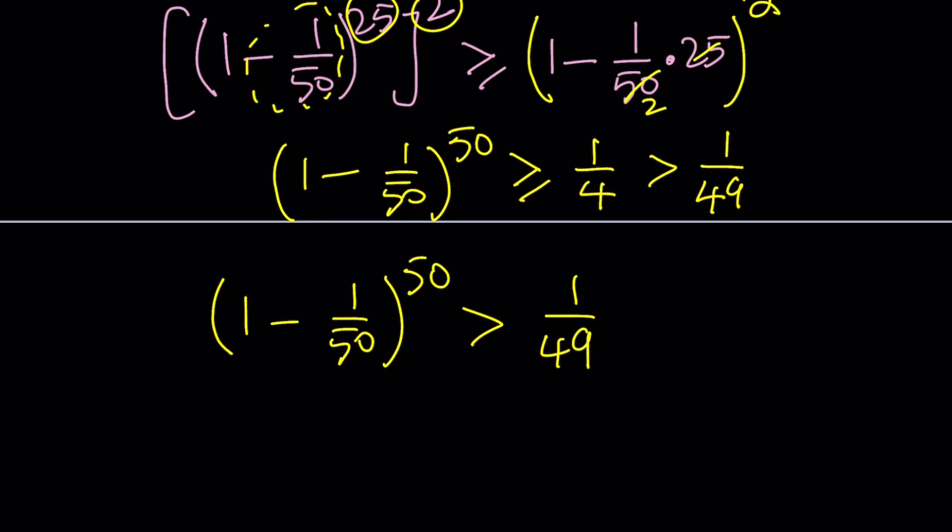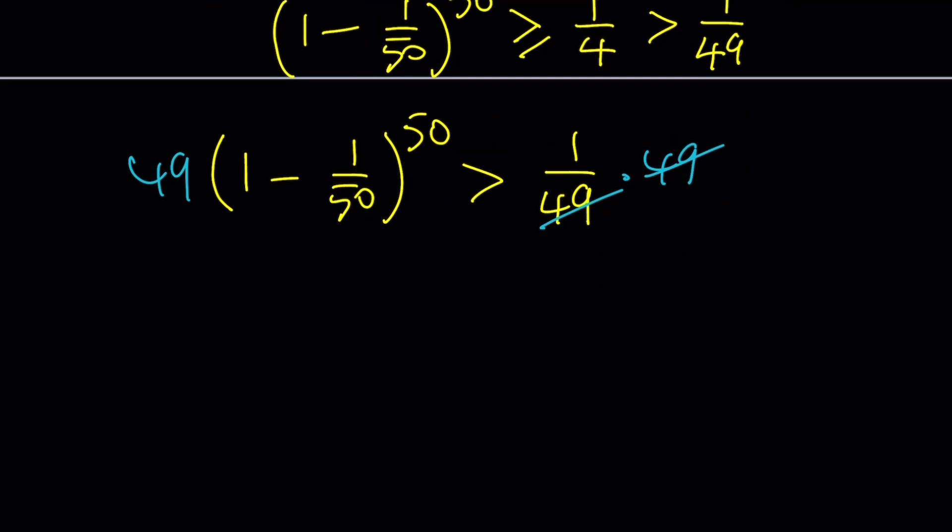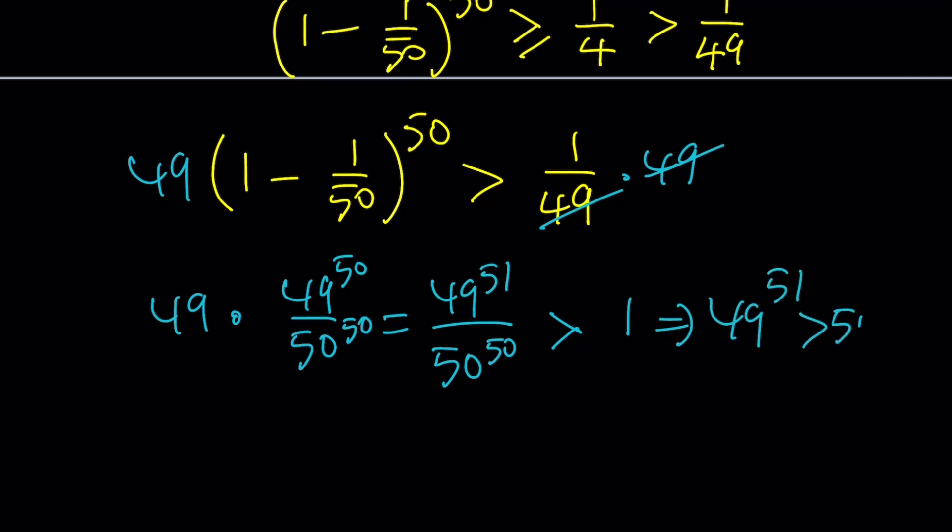Now multiply both sides by 49. The 49 cancels out, and we showed that this product is greater than 1. If you make a common denominator, you get 49 over 50 raised to the 50th power, which gives 49 to the power 51 over 50 to the power 50 is greater than 1. This implies that 49 to the power 51 is greater than 50 to the power 50.